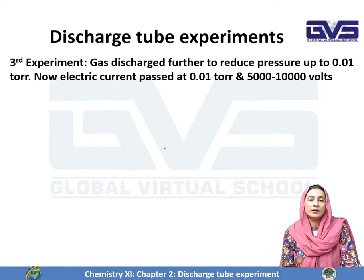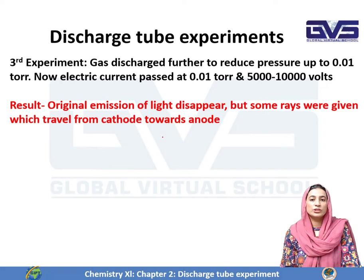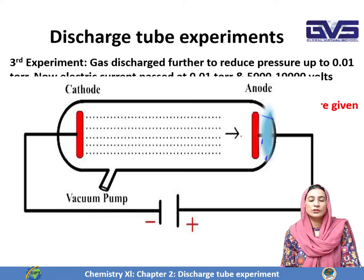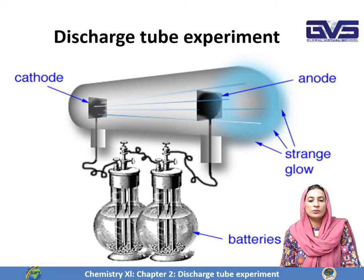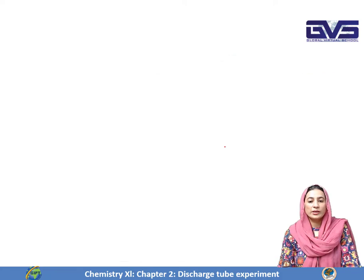In the third experiment, the pressure was further reduced by removing more gas from the tube. This time the pressure was reduced to 0.01 Torr, and current at 5,000 to 10,000 volts was passed. The original glow disappeared — there was no glow throughout the tube. However, rays appeared to arise from the cathode and travel towards the anode, producing a glow on the anode side. This phenomenon was given the name cathode rays light.